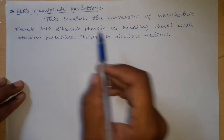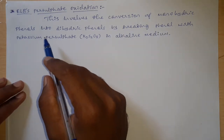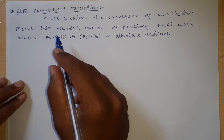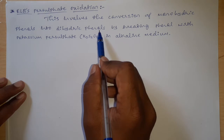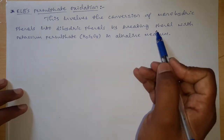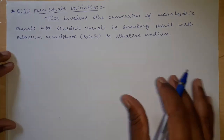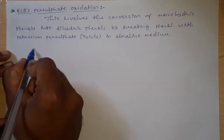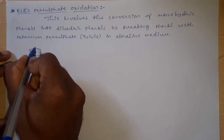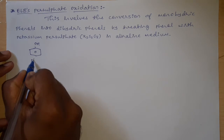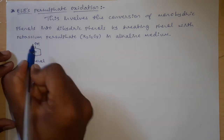Elbs' persulfate oxidation involves the conversion of monohydric phenols — that is, phenols containing only one OH group — into dihydric phenols, meaning containing two OH groups. Here I am explaining by taking phenol, which is a monohydric phenol because it contains only one OH group.